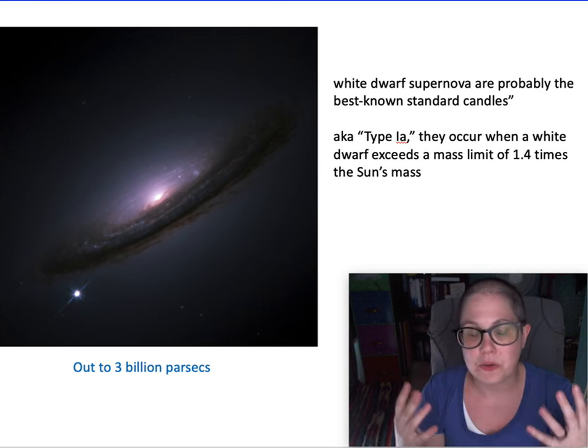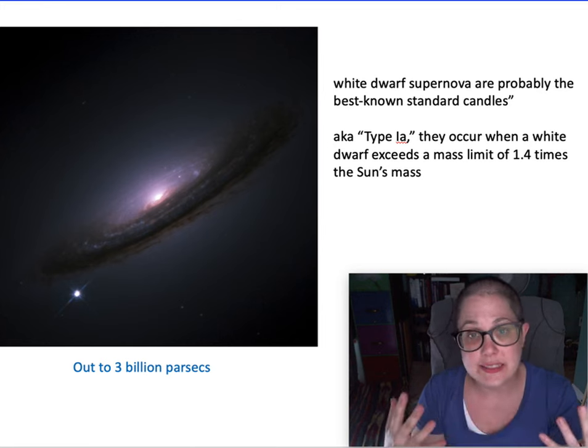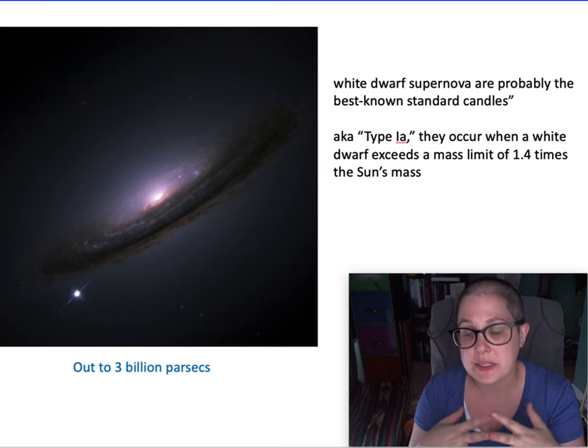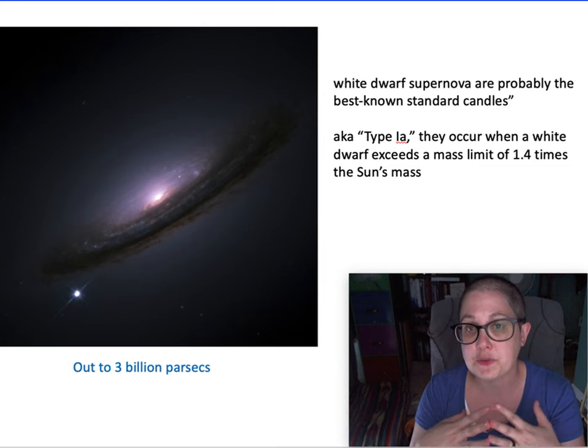There's a relationship. The supernovae tend to, because it's a specific mass limit, have a predictable luminosity. So again, predictable luminosity, predictable absolute brightness. You can measure the apparent brightness and again, get a distance from this. Again, this method has its own issues and inconsistencies, but measurements have been made out to about 3 billion parsecs. So now we're looking at much further galaxies.